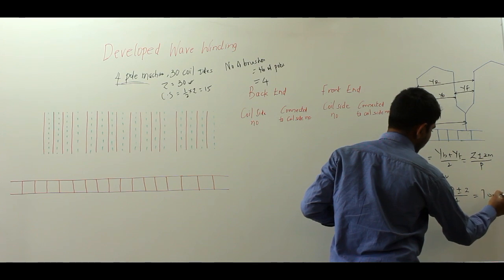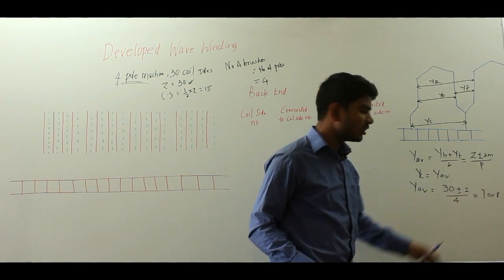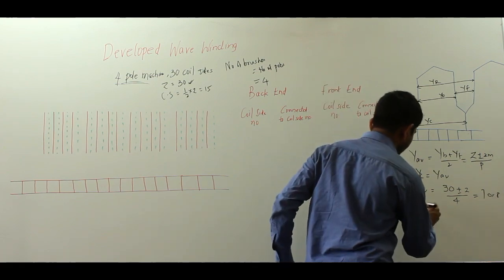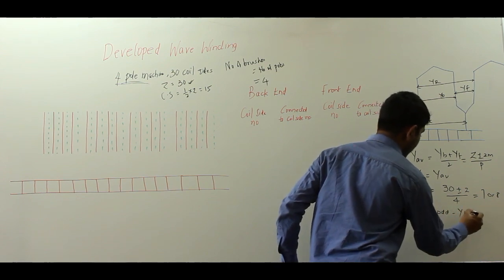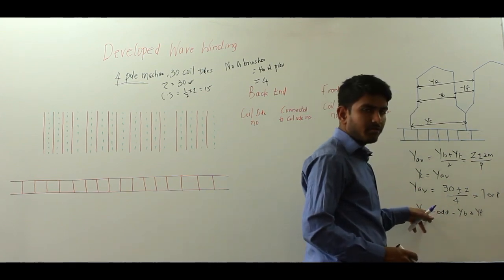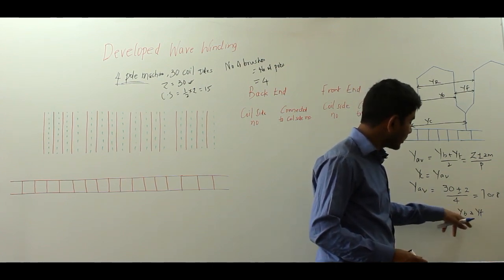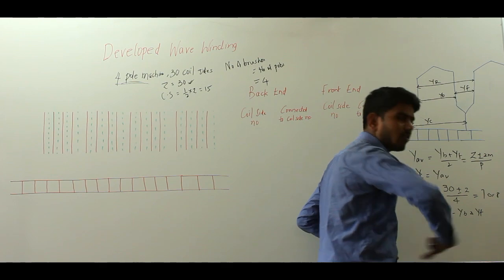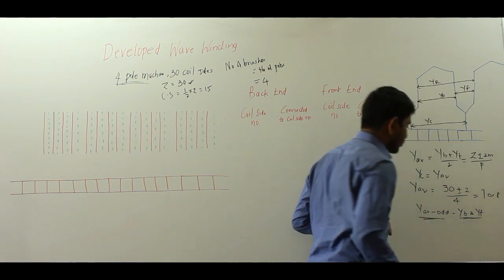So 8 is for progressive wave winding and 7 is for retrogressive wave winding. There is a winding rule: if Y_average is taken as an odd number, then YB and YF must also be odd. But it is not vice versa — if YB and YF are odd, it doesn't mean Y_average must be odd. This is only one way.